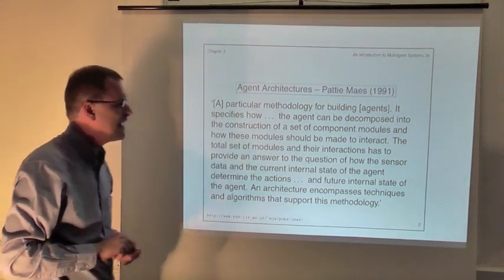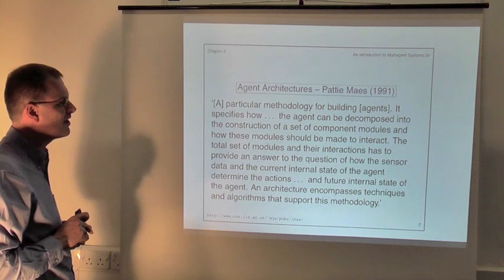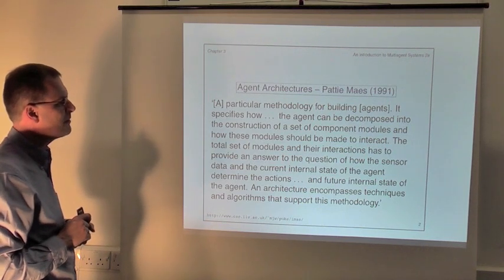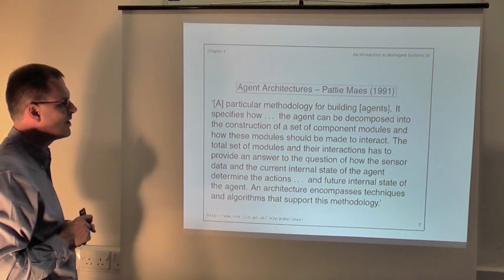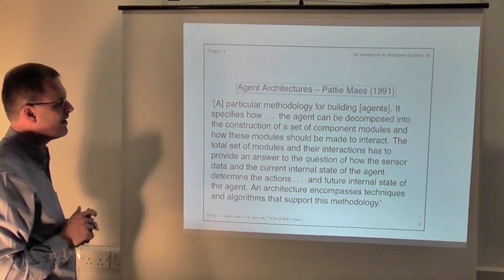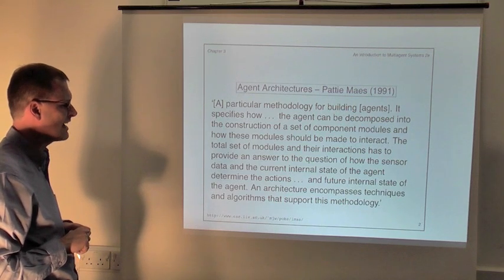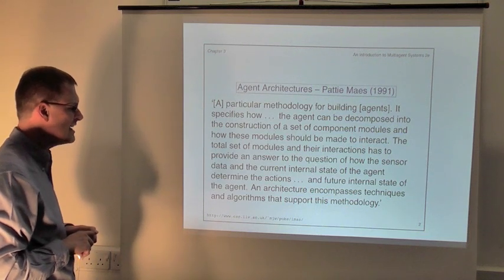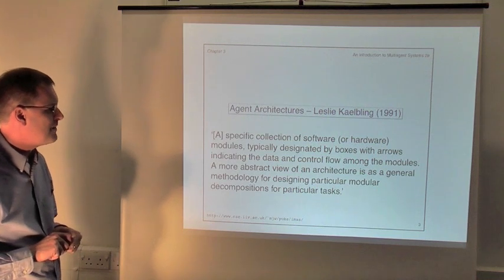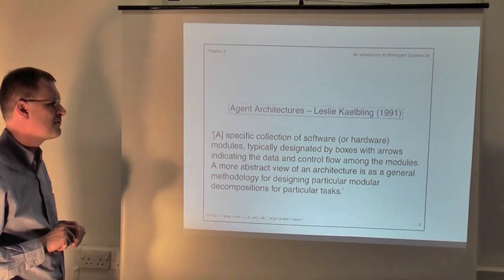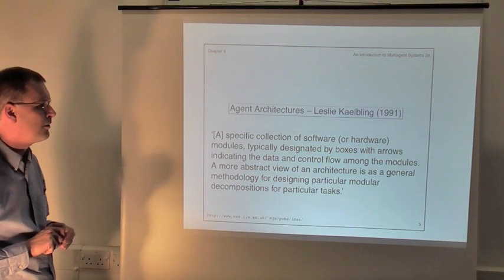Here are a couple of definitions of what an agent architecture is. This one is from Patty Mars, 1991: an agent architecture is a particular methodology for building agents. It specifies how the agent can be decomposed into a set of component modules and how these modules should be made to interact. The total set of modules and their interactions has to provide an answer to the question of how sensor data and current internal state determine the actions and future internal state of the agent. An architecture encompasses techniques and algorithms that support this methodology. Another definition from Leslie Kelbling in the same year: an agent architecture is a specific collection of software or hardware modules, typically designated by boxes with arrows indicating data and control flow among the modules.